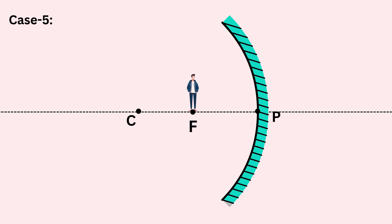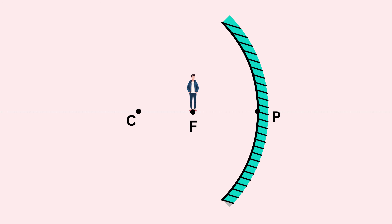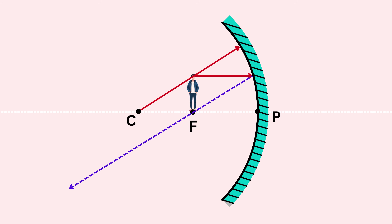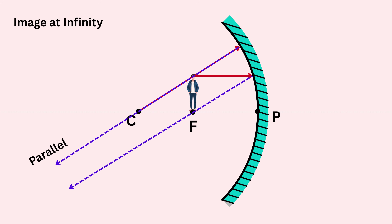Case five is where things get really interesting. The object is placed exactly at the focus F. We draw a ray parallel to the principal axis — it reflects through F. Then a ray through C — it reflects back along the same path. After reflection, these two rays become parallel to each other, and parallel rays never meet, so the image is formed at infinity. It is highly enlarged. Since the reflected rays are on the mirror's reflective side, the image is real, and because it would have formed below the axis, it is inverted.